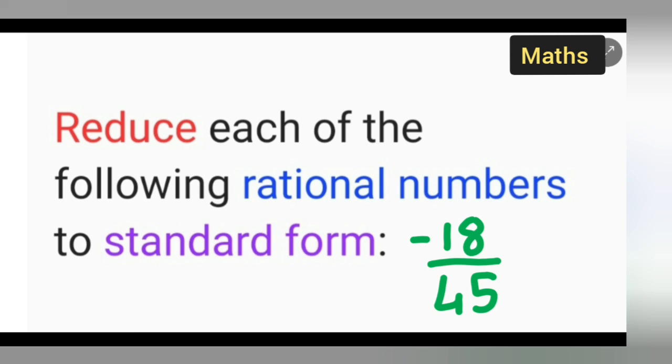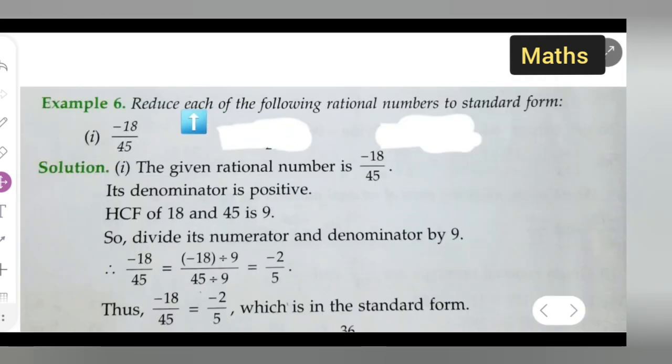The question is reduce each of the following rational numbers to standard form that is minus 18 upon 45. So let us reduce this rational number in standard form. You can take down the question reduce each of the following rational numbers to standard form. So minus 18 upon 45. You can take down this.